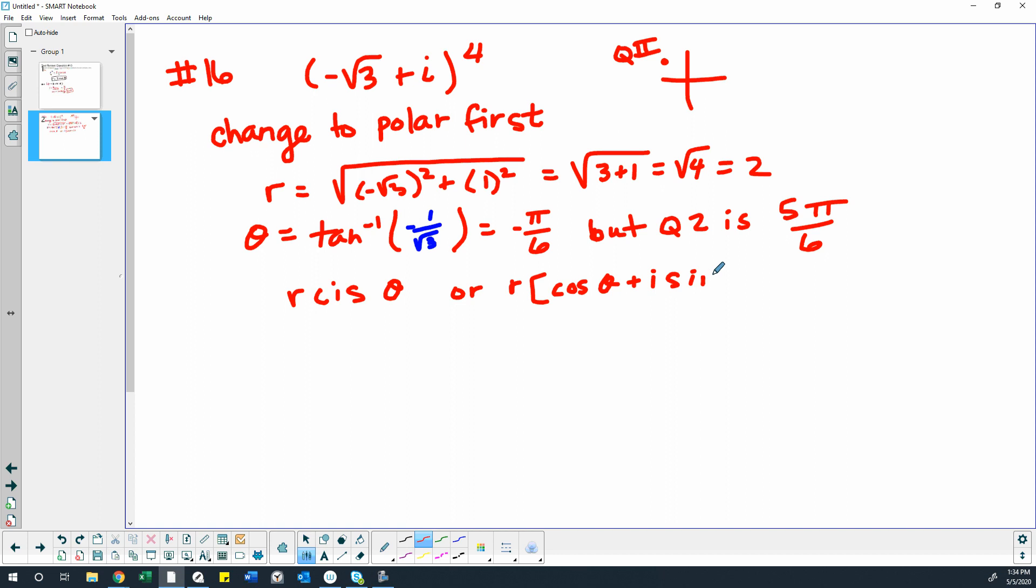Remember, those mean the same thing. The answer is given, like, they don't use the CIS form on this test at all, just so you know. But it's fine to write it out on your paper that way as long as you know what you're doing because it's a shortcut. So that gives us 2 CIS 5 pi 6.